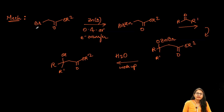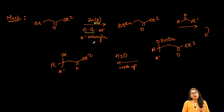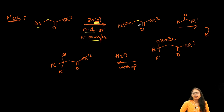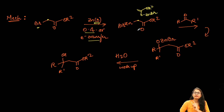Now for the detailed mechanism: we start with the alpha-haloester and zinc in the zero oxidation state. Whether by oxidative addition or electron transfer — both described in different books and both correct — zinc inserts between the carbon and bromine bond.